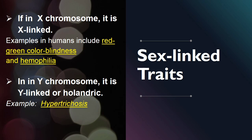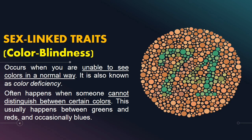Ano-ano ang mga genetic disorder under X-linked traits? Sa human, sa tao, ang genetic disorder ay red and green color blindness. Second, hemophilia. Kapag naman Y-linked traits, ang genetic disorder na under dito ay hypertrichosis. So sa topic natin ngayon, ang tatalakayin lang natin ay red-green color blindness or color blindness.